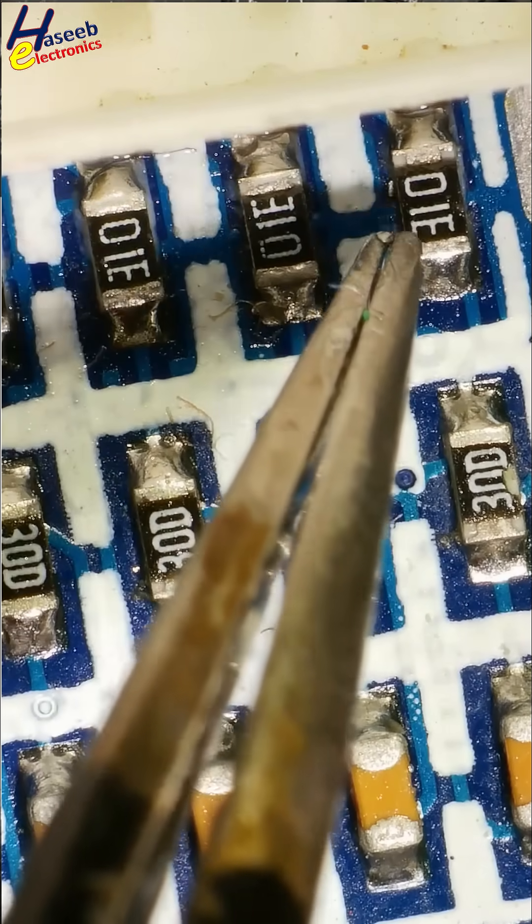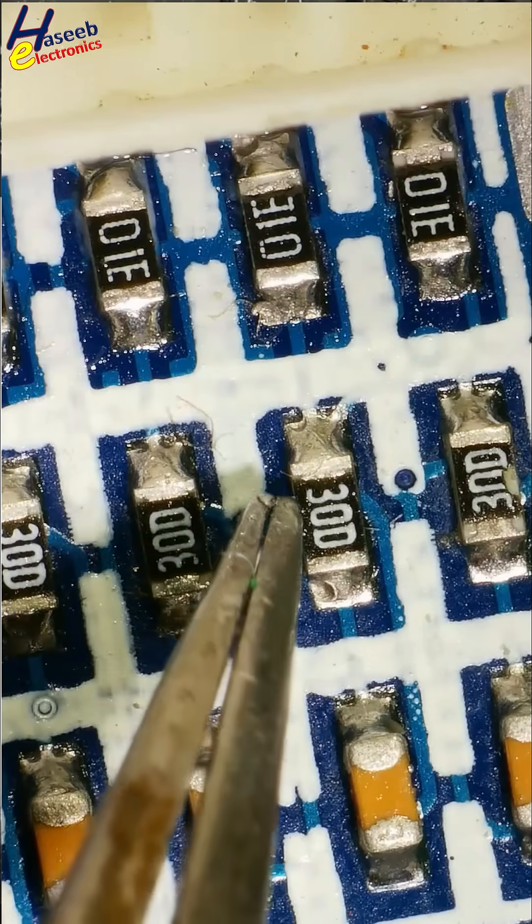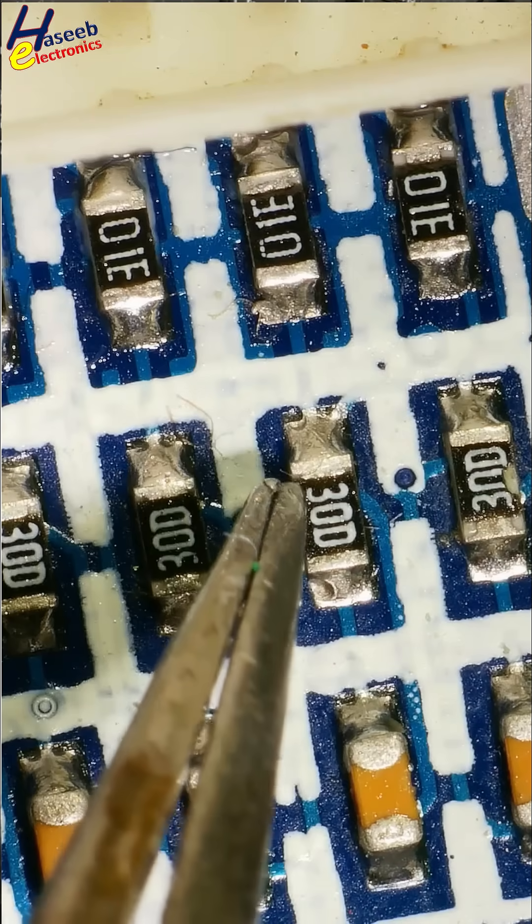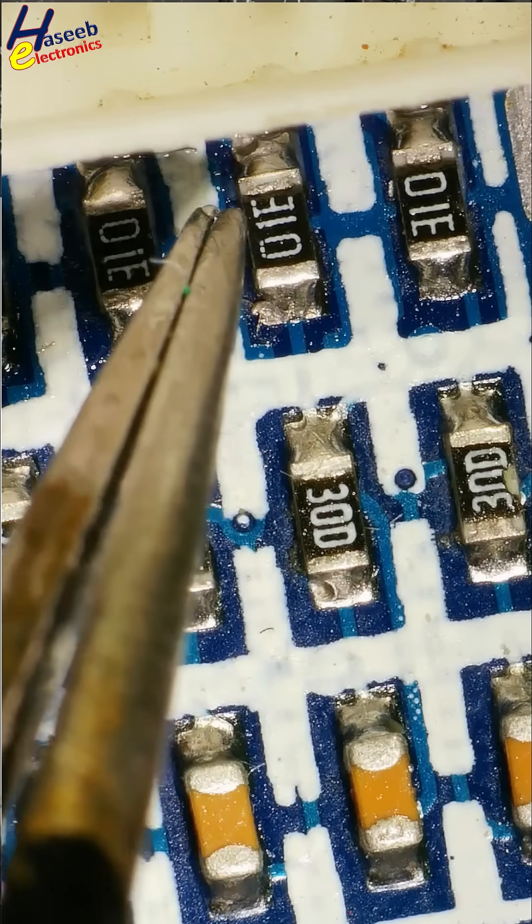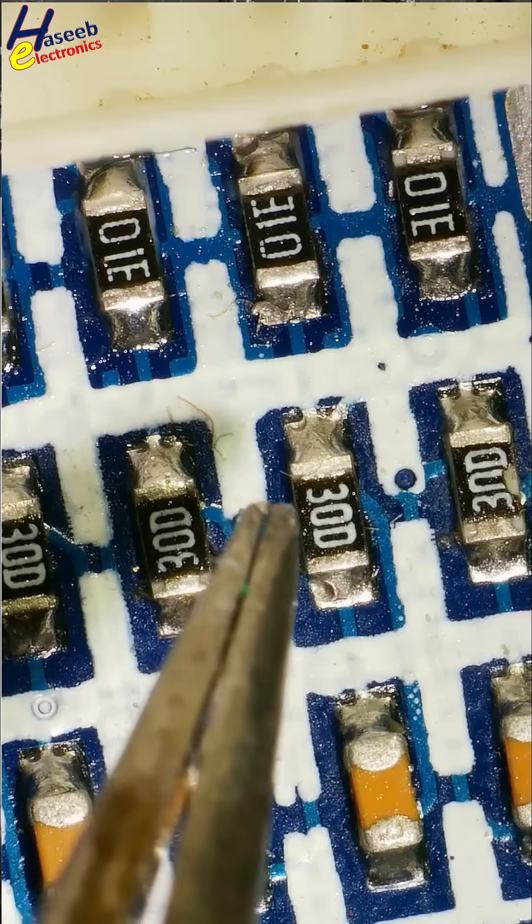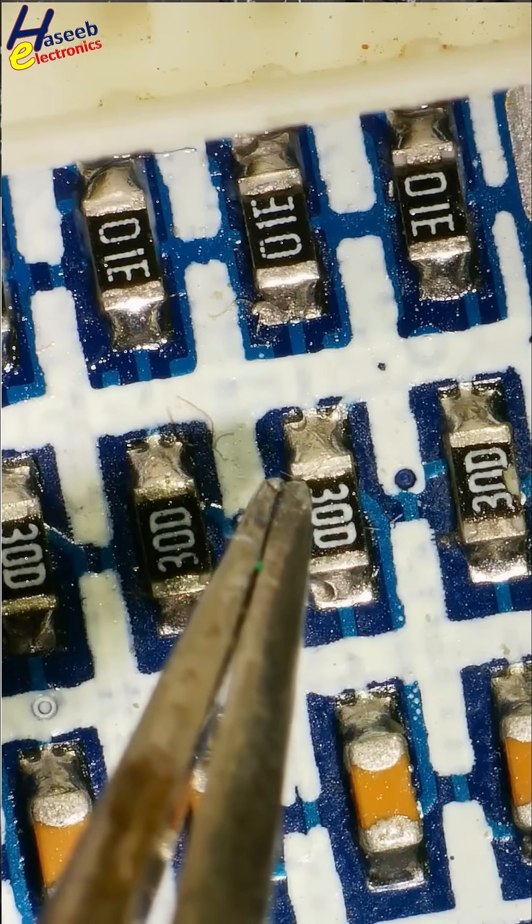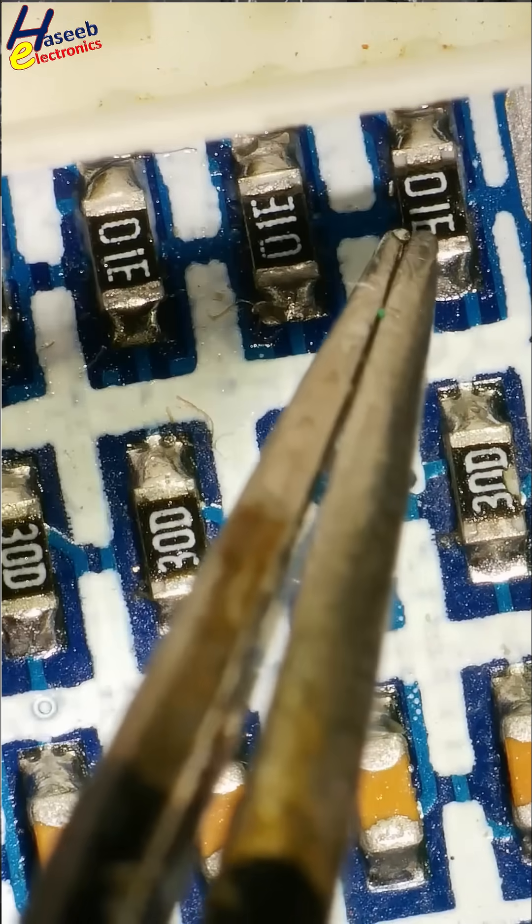It is 01E, because in this marking system, 3 and E are looking different. 3 is in this shape and E, alphabet.